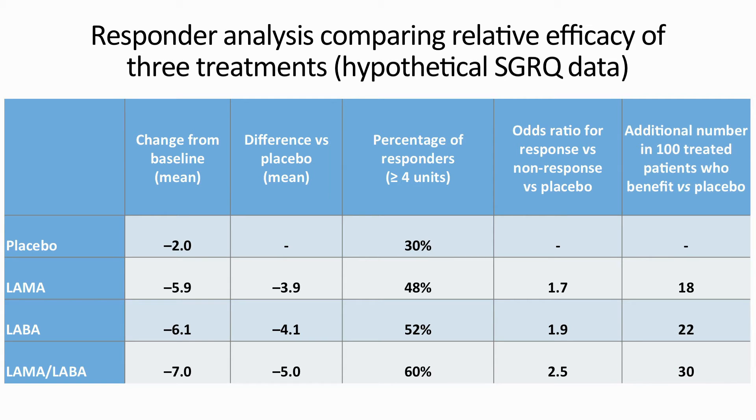And finally, we can even calculate the additional number of patients in 100 patients treated who would benefit from active treatment compared with placebo. Thus, we see that PRO data may be reported in a number of different ways, and each may have its own advantages. But perhaps a response analysis may be the most valuable because it can provide a useful answer to the practicing clinician: based on the results of this trial, what are the odds of the patient sitting in front of me having a worthwhile benefit with this treatment rather than another?